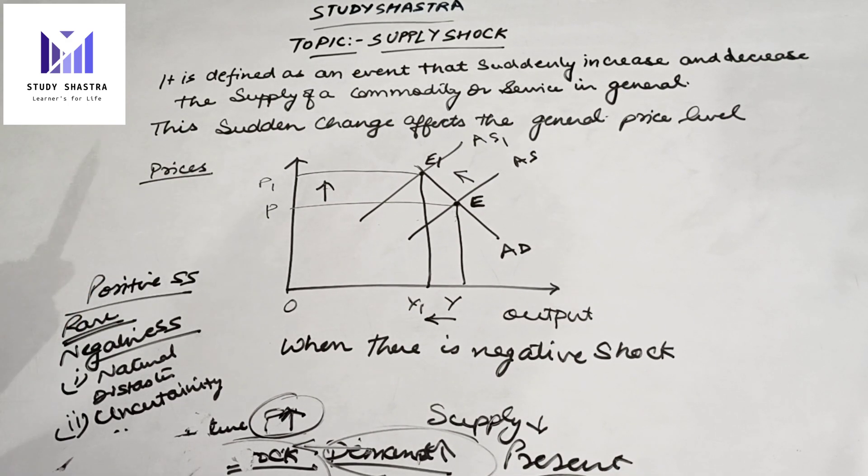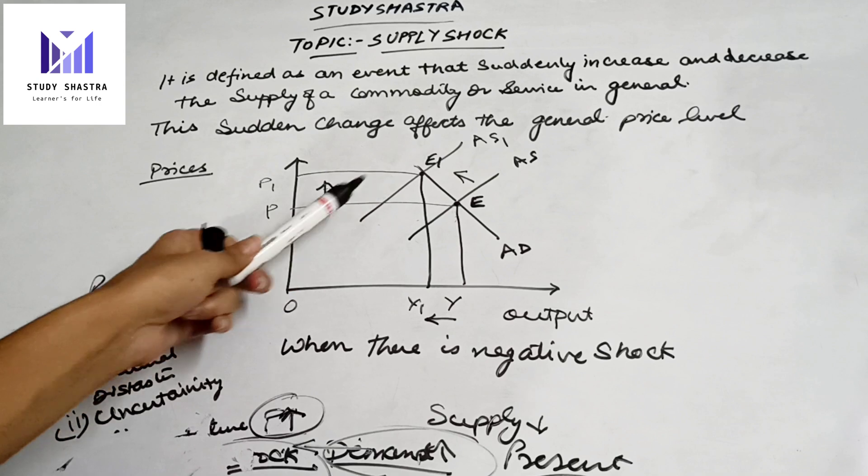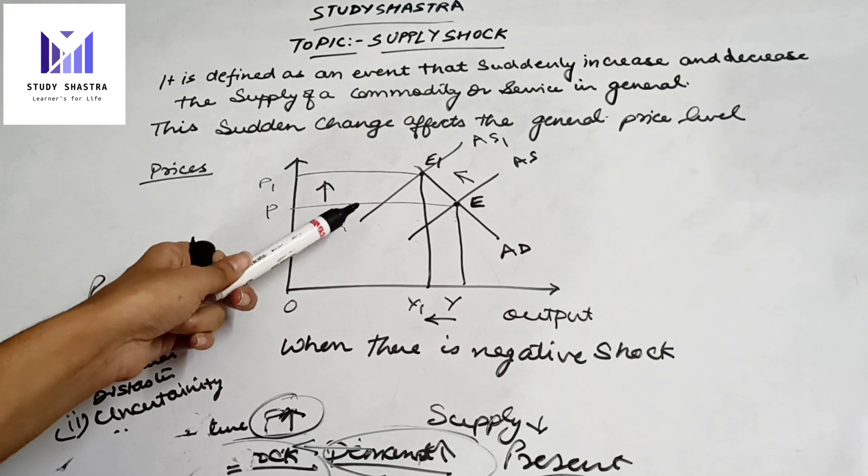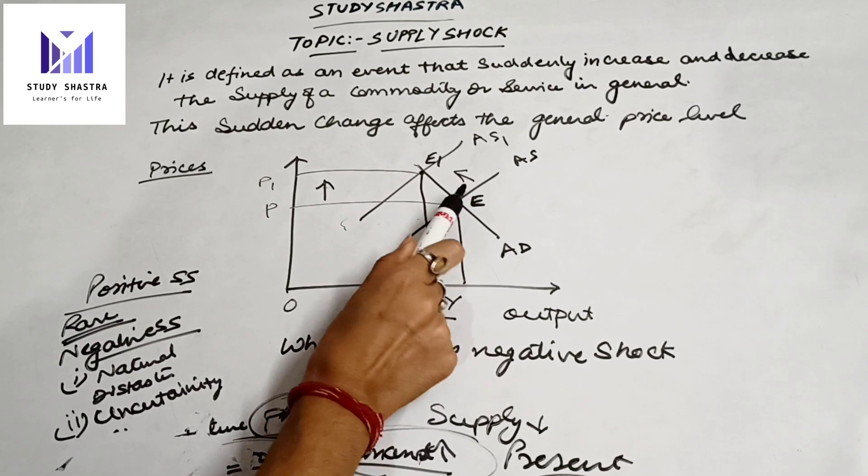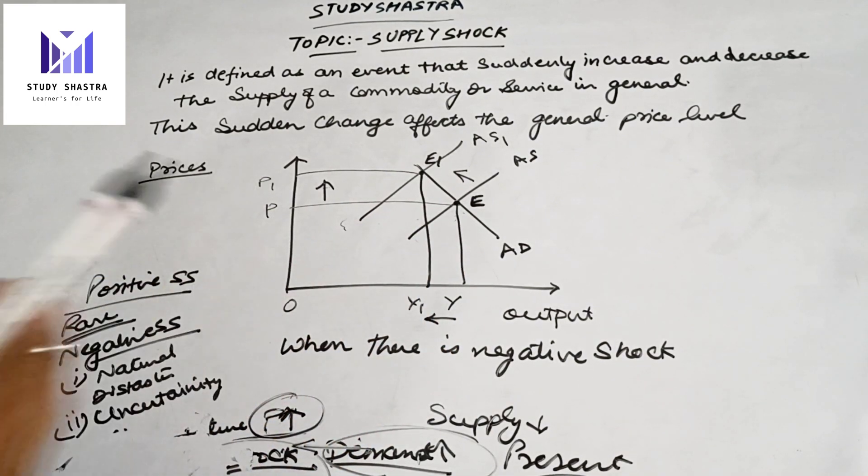When there is a negative shock, it leads to a fall in aggregate supply, which shifts it leftward, moving the equilibrium from point E to point E'.